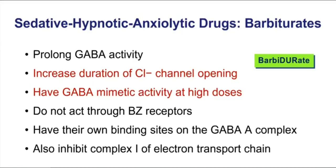Here's another difference between benzos and barbs. Barbiturates have GABA-mimicking activity at high doses, and this possibly explains why the dose-response curve for barbiturates is so steep. Because even if you deplete GABA, the barbiturate can continue to bind and activate the GABA-A complex, increasing that duration of chloride channel opening. You continue to get a response, possibly contributing to further CNS depression. Barbs don't work through BZ receptors — they've got their own binding site.